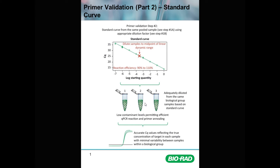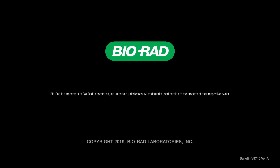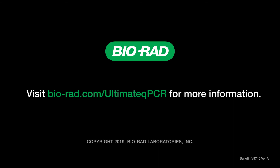As we see here at the end, we end up with our biological replicates — mouse 1, mouse 2, and mouse 3 — that were adequately diluted using the standard curve. Now the contaminants are all at low levels, permitting efficient qPCR reaction and primer annealing, giving amplification curves that are much tighter and closer together within the same biological group. This minimizes variability and increases the chances of obtaining statistically significant data between treatment groups.